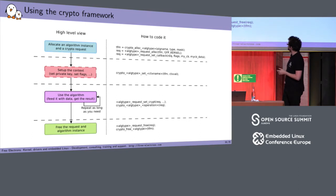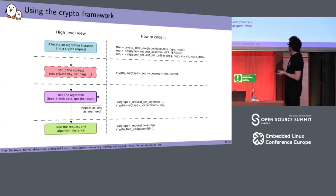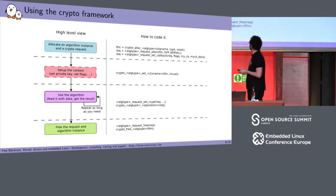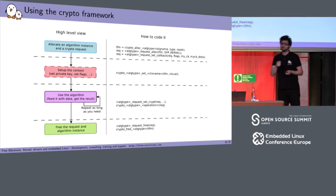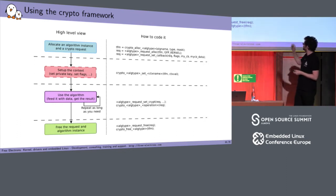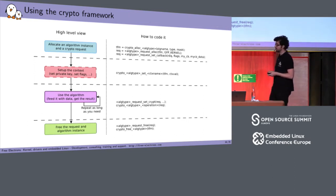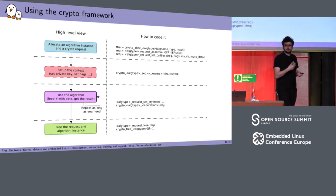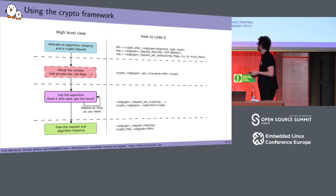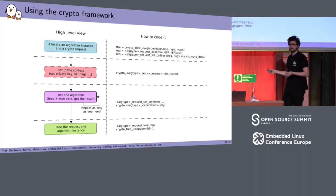Once everything is set up you can start passing data to the crypto instance. You use request_set_crypt, passing the input buffer, output buffer, and the length of the buffer. Then you trigger the crypto operation using crypto_then_ALG_type_then_operation_name — for example, encrypt or decrypt for a cipher. You can repeat this as many times as needed for multiple blocks of data to encrypt or decrypt. Once done, you free both the request and the crypto engine context.